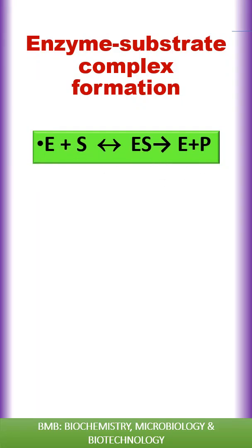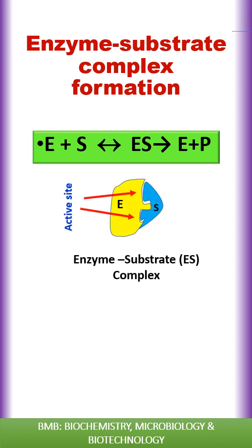The primary requirement for enzyme catalysis is that the substrate must bind with the enzyme at the active site to form an enzyme-substrate complex, and in the next step, product formation occurs. There are a few theories to explain the mechanism of enzyme-substrate complex formation.